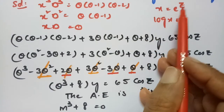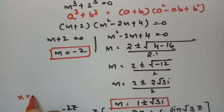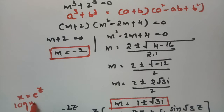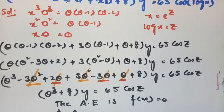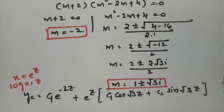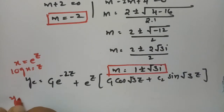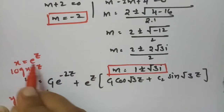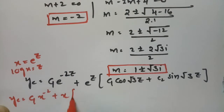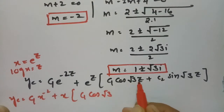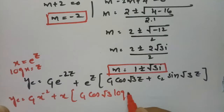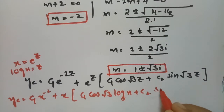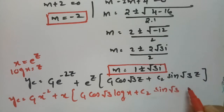Since x = e^z and log x = z, we transform back to original variables. The complementary function becomes yc = c₁x^(-2) + x·[c₂ cos(√3 log x) + c₃ sin(√3 log x)]. This is the complementary factor in terms of x.